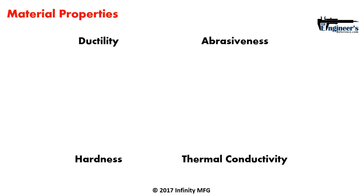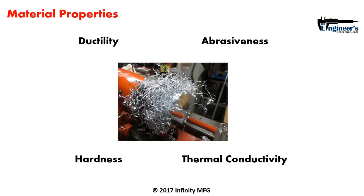Certain materials like titanium have a low thermal conductivity, which can cause your tool to wear out prematurely because the heat actually travels back to the tool. Issues like ductility can lead to problems such as birds nesting, which you can see in the visual. A chip is what's removed from your workpiece — it carries away heat but can wrap around and damage your workpiece or pose a hazard to the operator. Different tool geometries can eliminate or greatly reduce this problem.